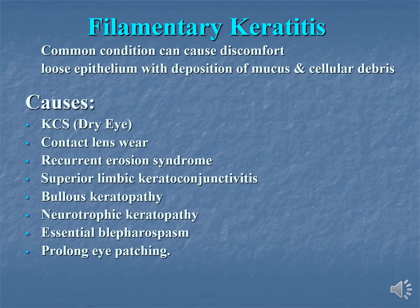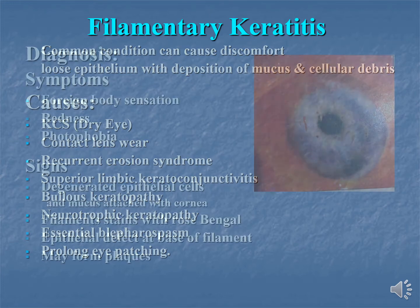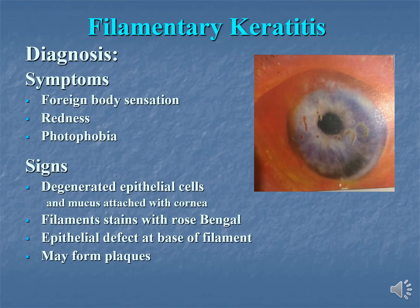Other causes include neurotrophic keratopathy, essential blepharospasm, and prolonged eye patching. The patient usually presents with foreign body sensation, redness, circumcorneal congestion, and photophobia. On examination, you look for degenerated epithelial cells and mucus strands attached to the cornea. These filaments stain with rose bengal — as you can appreciate in the picture where filaments are stained well. Epithelial defect at the base of the filaments is usually present, and in long-standing cases they may form plaques.